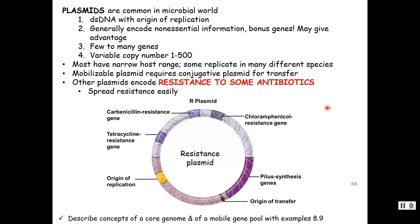Plasmids are very common in the microbial world — also in protozoa and fungi. They are double-stranded and have their own origin of replication. They usually carry non-essential genes (essential genes stay on the chromosome), but these genes often give an advantage to the bacterium. A plasmid can have few to many genes — for example, chloramphenicol resistance genes or a gene to make a pilus for conjugation. These plasmids are mobile and can spread resistance or other traits very easily between bacteria.